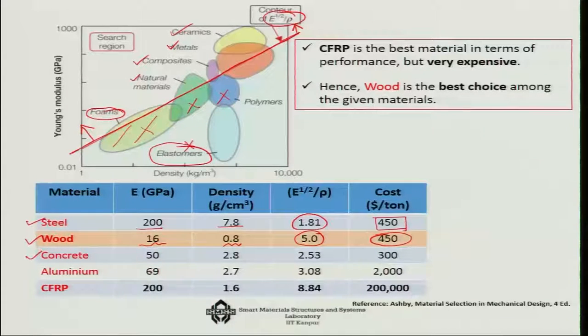Let us look at concrete. It has a modulus of elasticity of 50 gigapascals, density of 2.8 grams per cubic centimeter, so the factor will be 2.53. Cost wise it is cheap, but this factor shows it is not as good as wood.